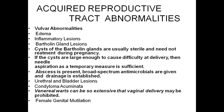Acquired reproductive tract abnormalities include vulvar abnormalities such as edema, inflammatory lesions, and Bartholin duct lesions. Cysts of Bartholin duct glands are usually sterile and do not need treatment during pregnancy. If cysts are large enough to cause difficulty with delivery, needle aspiration as a temporary measure is sufficient. If an abscess is present, broad-spectrum antimicrobials are given and drainage is established.